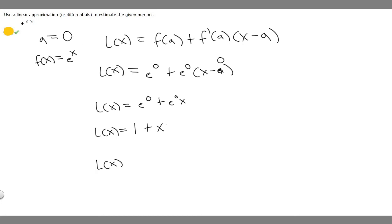So the estimation is just going to equal 1 + (-0.01). When you calculate that, you should get that L(x) equals 0.99. So 0.99 is the answer to this problem.